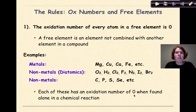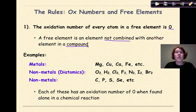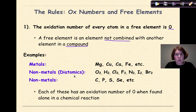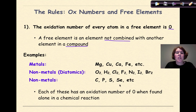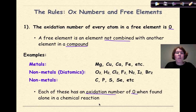The oxidation number of every atom in a free element is 0. A free element is defined as an element not combined with another element in a compound — it's free-standing, alone, by itself. Examples for metals include magnesium, copper, calcium, and iron. For non-metals, these are your diatomics: oxygen, hydrogen, chlorine, fluorine, nitrogen, iodine, and bromine, as well as non-diatomics like carbon, phosphorus, sulfur, and selenium. Each of these has an oxidation number of 0 when found alone in a chemical reaction.